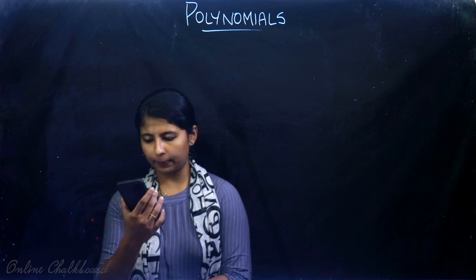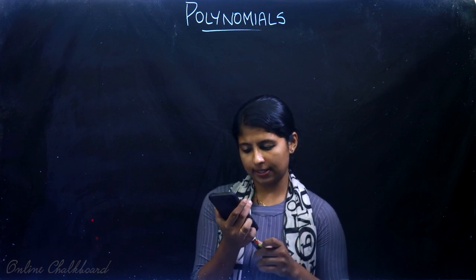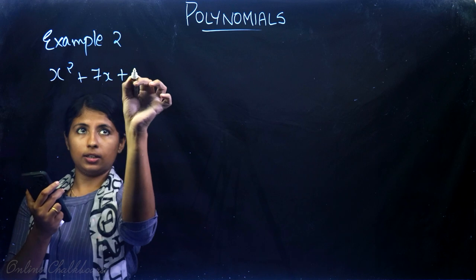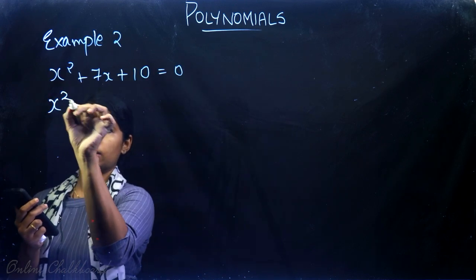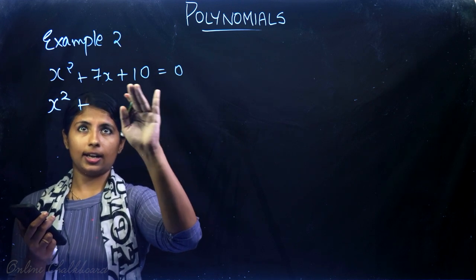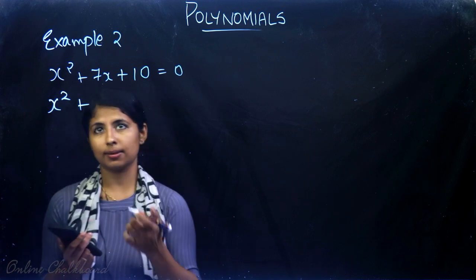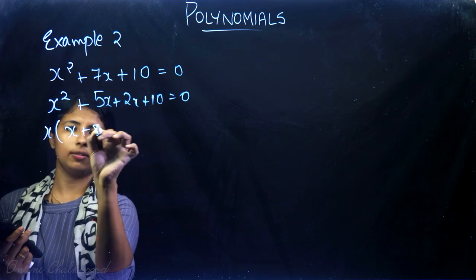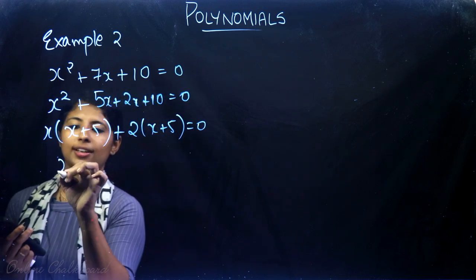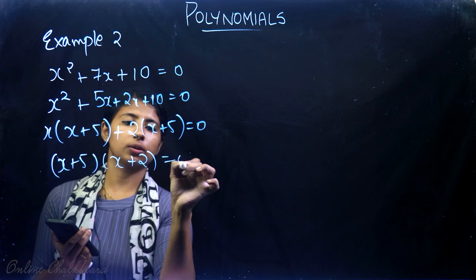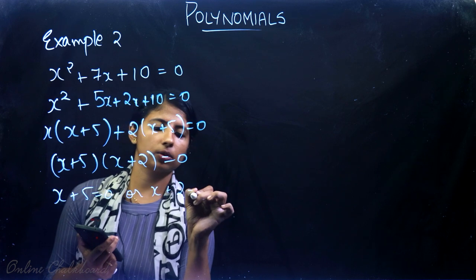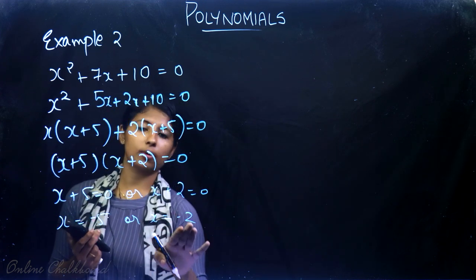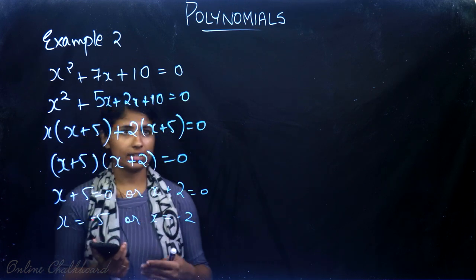Now let's move to Example 2. Find the zeros of the quadratic polynomial x² + 7x + 10 and verify the relation between zeros and coefficients. We factorize: we need two numbers with product 10 and sum 7. That's 5 and 2. So x² + 5x + 2x + 10 = 0, giving x(x + 5) + 2(x + 5) = 0, so (x + 5)(x + 2) = 0, giving x = -5 or x = -2.